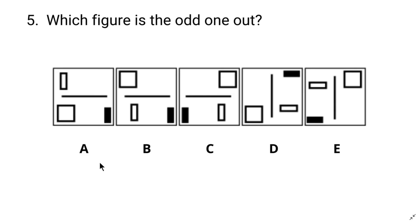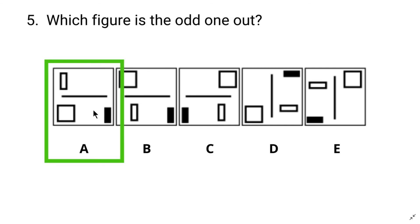Alright, here we can see a square, a white rectangle, a black rectangle, and a line in each image. When we look at these images, we can see there are two sides in each image separated by the line. In images B, C, D, and E, one side has only the square and the other side has two rectangles. But A is not like that, so it's the odd one. The answer is A. I hope you got the correct answer.